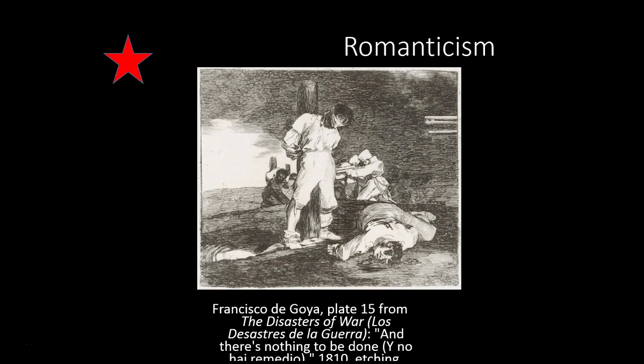Under the pretext of helping Charles invade Portugal, Napoleon instead usurped the throne and installed his brother, Joseph Bonaparte, as ruler of Spain. Soon, a bloody uprising occurred in which countless Spaniards were slaughtered in Spain's cities and countryside. Although Spain eventually expelled the French in 1814 following the Peninsular War of 1807–1814, the conflict was long and gruesome for both nations. Throughout that time, Goya worked as a court artist for Joseph Bonaparte, though he would later deny any involvement with the French intruder king.